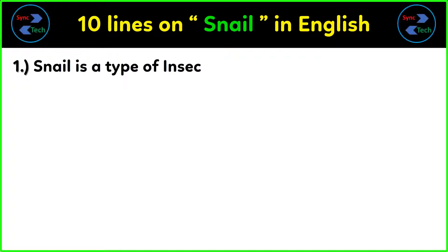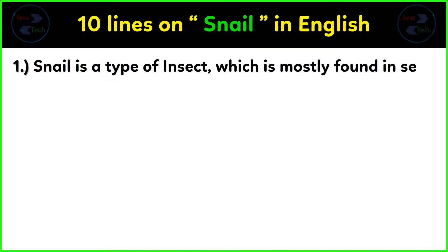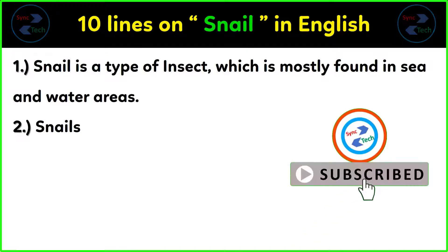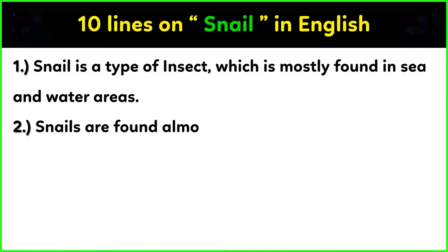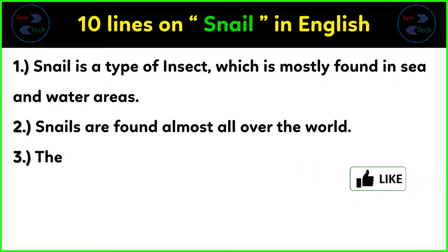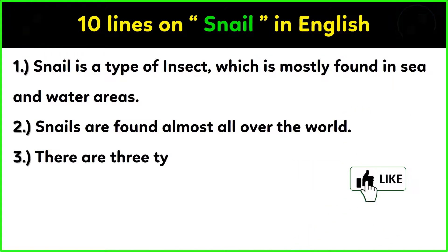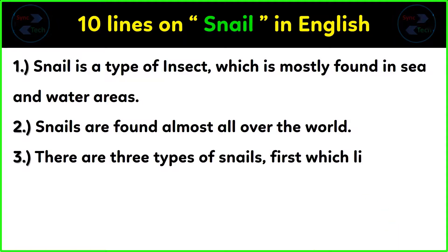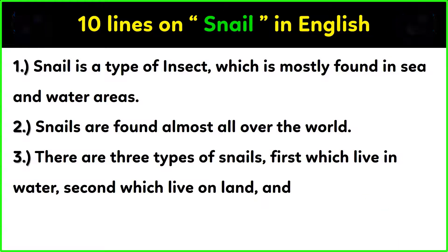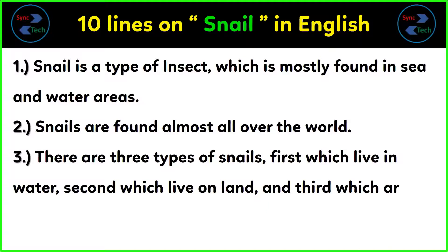Snail is a type of insect which is mostly found in sea and water areas. Snails are found almost all over the world. There are three types of snails: first, which live in water; second, which live on land; and third, which are without shells.